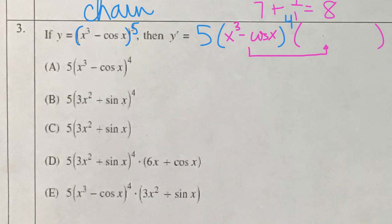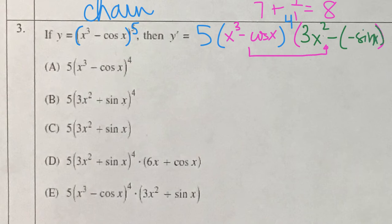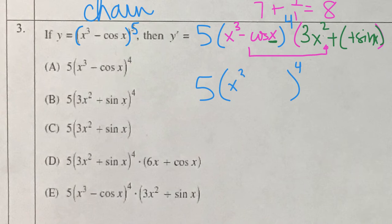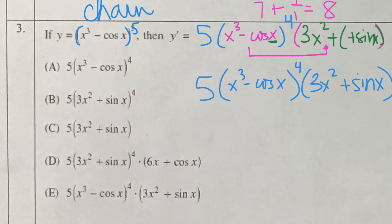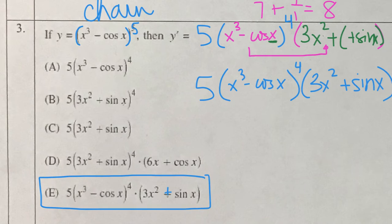The outer part was x to the 5th, and the inner part is x cubed minus cosine x. The derivative of x cubed is 3x squared, and the derivative of cosine is negative sine. So the two negatives become a plus inside. We have 5 times (x cubed minus cosine x) to the 4th power, times (3x squared plus sine x). Scanning the answer choices, the answer is E — that's a plus down there, not a divided by.